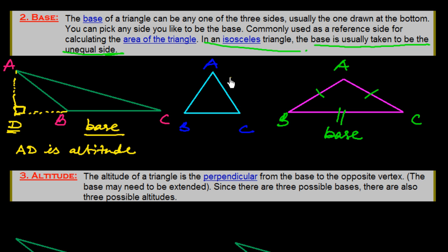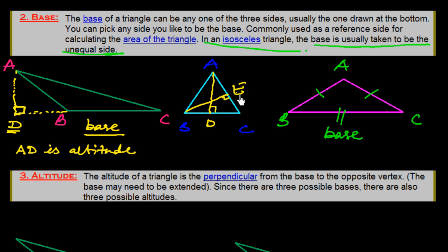In an equilateral triangle, it is straightforward. If we take BC as base, then AD is the altitude drawn from vertex A perpendicular to BC. If we take AC as base, we draw a perpendicular from B at 90 degrees to AC — that would be the altitude BE. And if we take AB as the base, then CF would be the altitude, drawn perpendicular to AB.